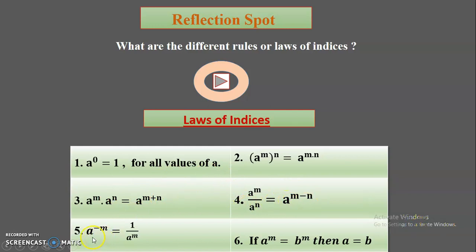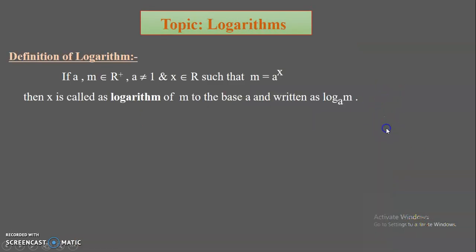The fifth law of indices: a raised to minus m — if the index sign is negative, you can rewrite it as 1 upon a raised to m. The last important law: if a raised to m equals b raised to m — the bases are different but the indices are same — then we can conclude the bases should be equal. Do remember these laws of indices, as we will definitely need them in many topics.